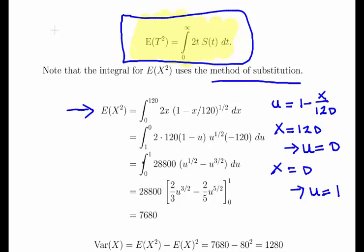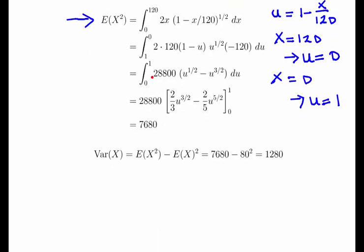The integral from 1 to 0 of 2 times 120 times (1 - u) times u^(1/2) times 120. Here we change the sign, so we have the integral from 0 to 1 of 28,800 times that expression. It works out to be 7,680. That's the expected value of X^2.